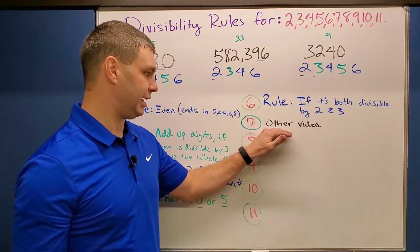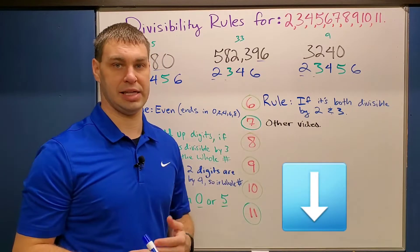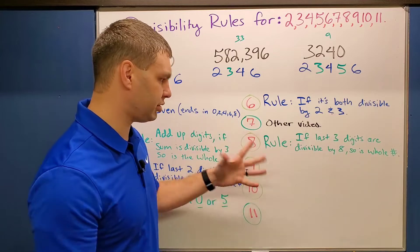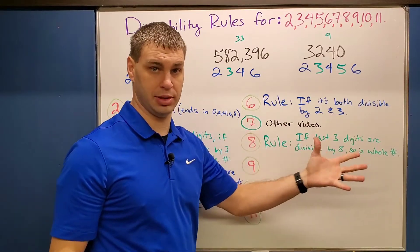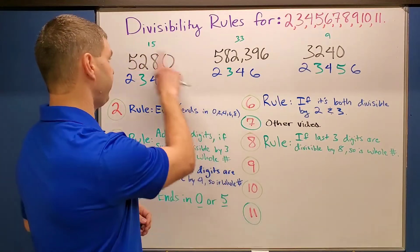And then one more time, I didn't do seven or 11 in this video. Those are going to be in that separate video down in the description. In my opinion, the next one, eight, is the hardest one because the rule says if the last three digits of your whole number is divisible by eight, so is the whole thing.